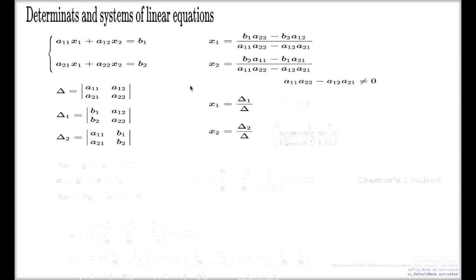That the solution to your system will be the quotients of this type, where the determinant at the bottom is the principal determinant of the system. And the ones at the top, they are the determinants which are obtained from the main one by crossing out the column corresponding to the unknown and filling the gaps with the right-hand side. That's what is called Cramer's rule.